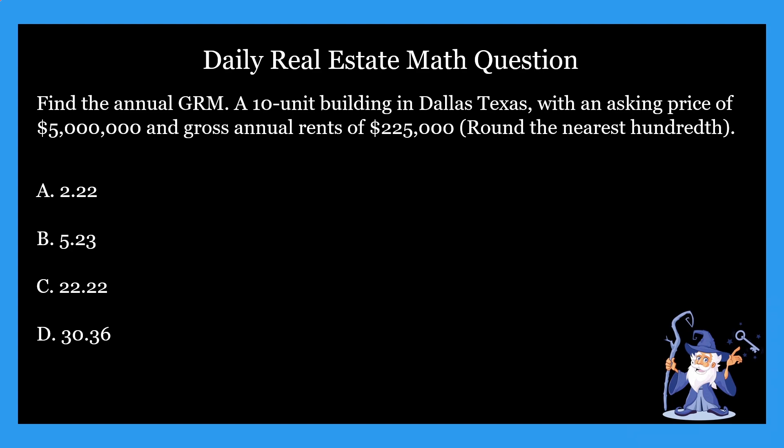Let's talk about GRM. We did a video yesterday covering that, and we're going to be talking about it again today. So let's take a look at this question. It says: find the annual GRM — a 10 unit building in Dallas, Texas, with an asking price of $5 million and gross annual rents of $225,000. Round to the nearest hundredth. The four options are: A) 2.22, B) 5.23, C) 22.22, D) 30.36.